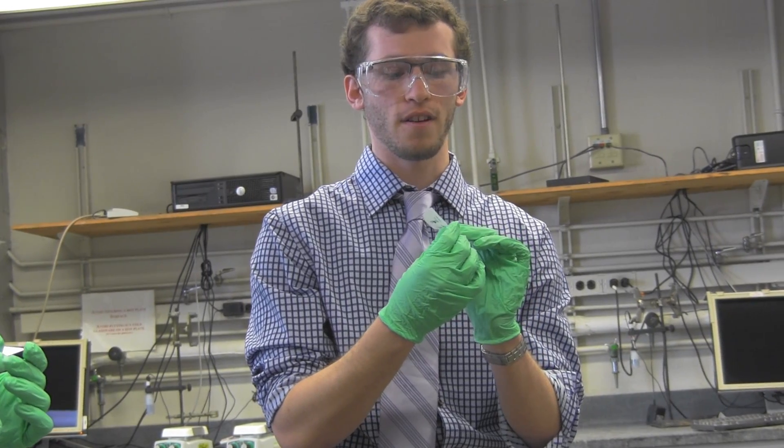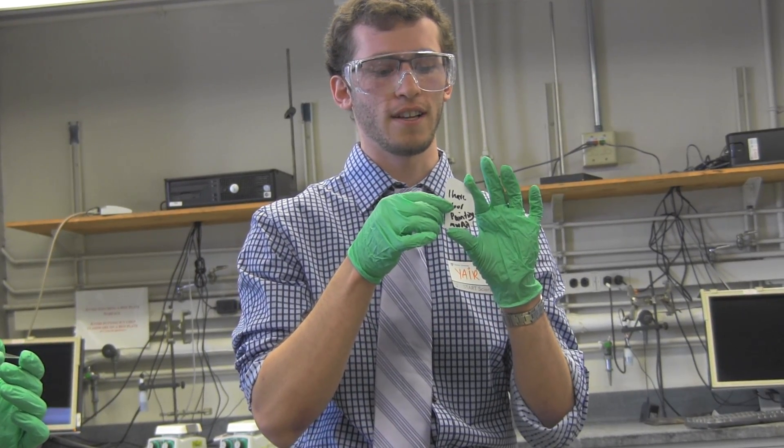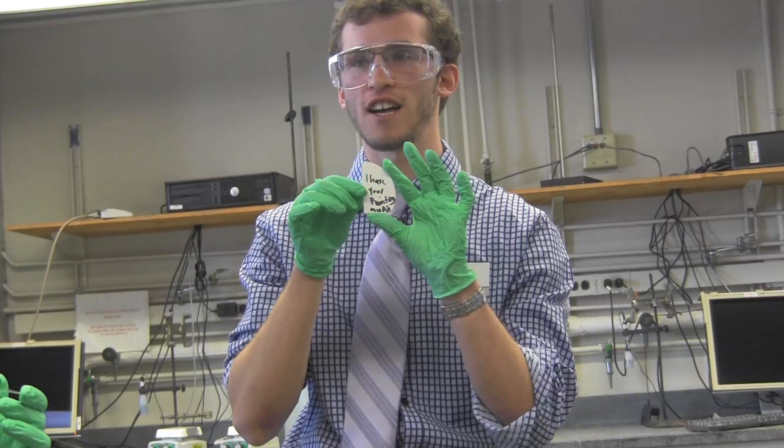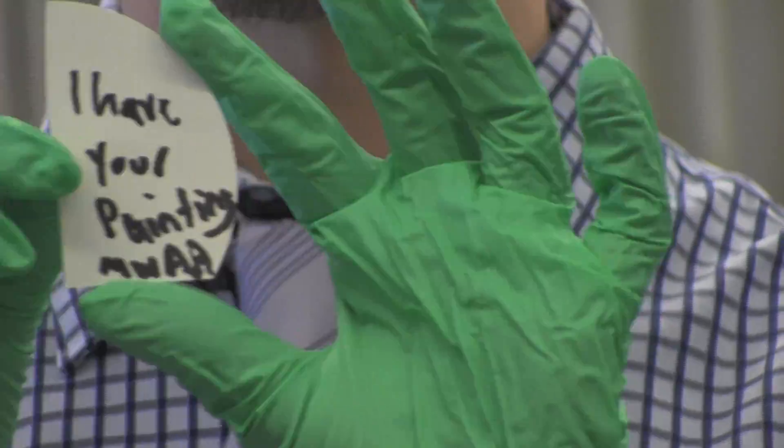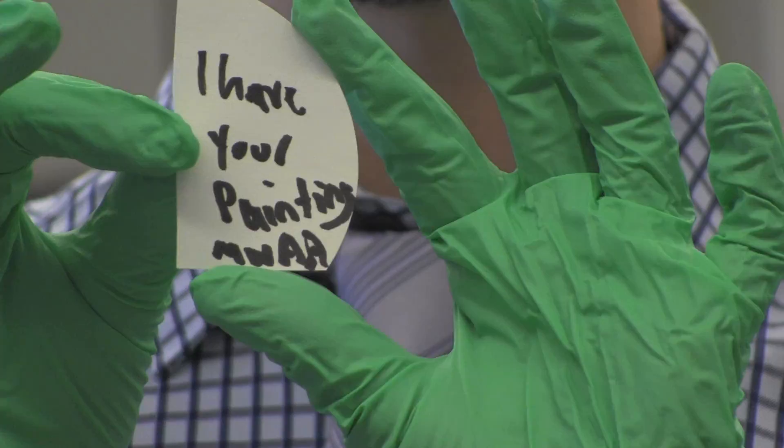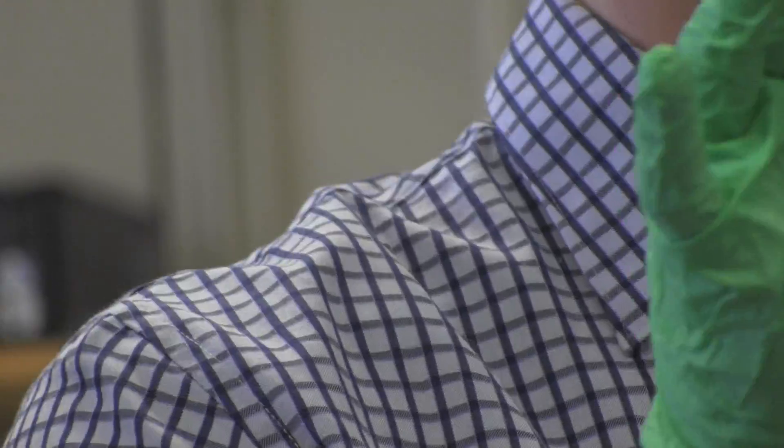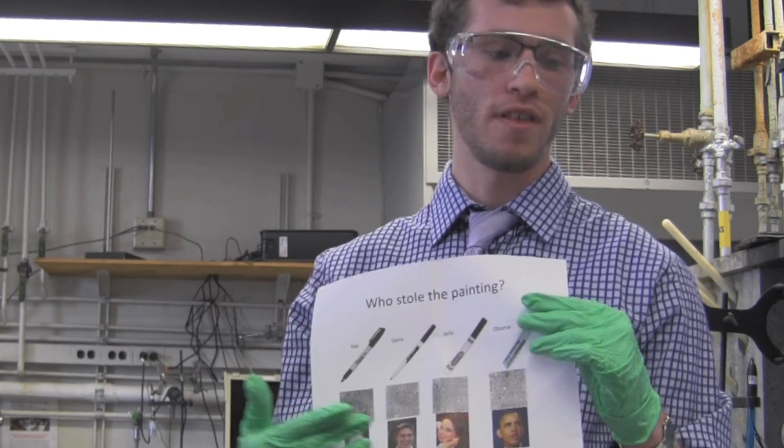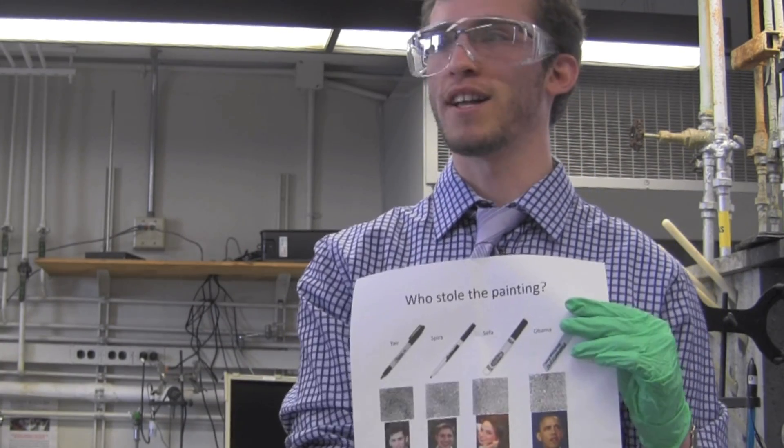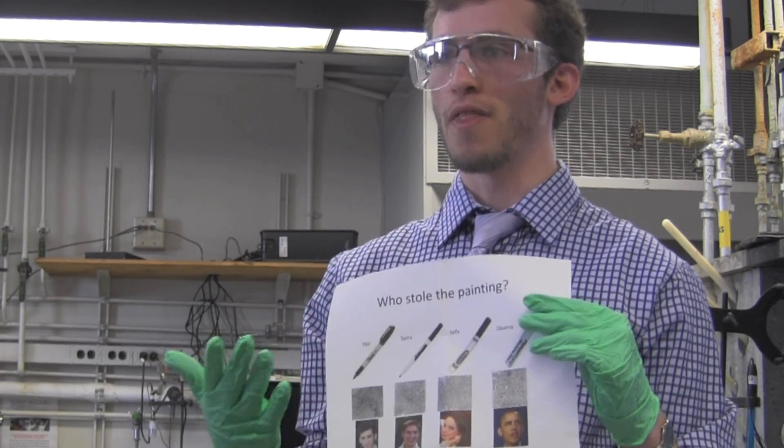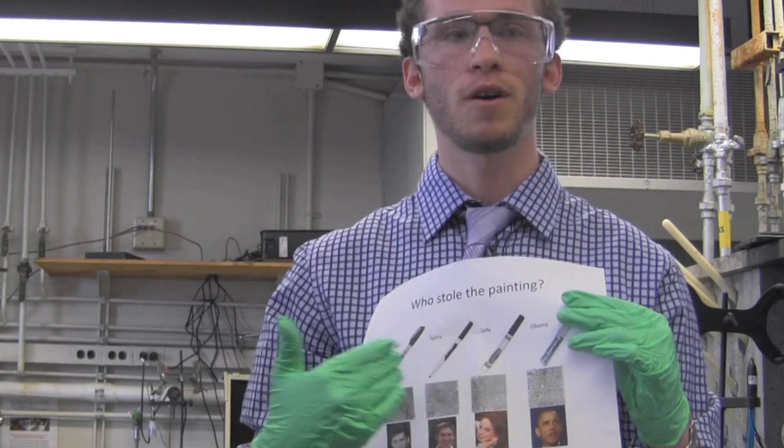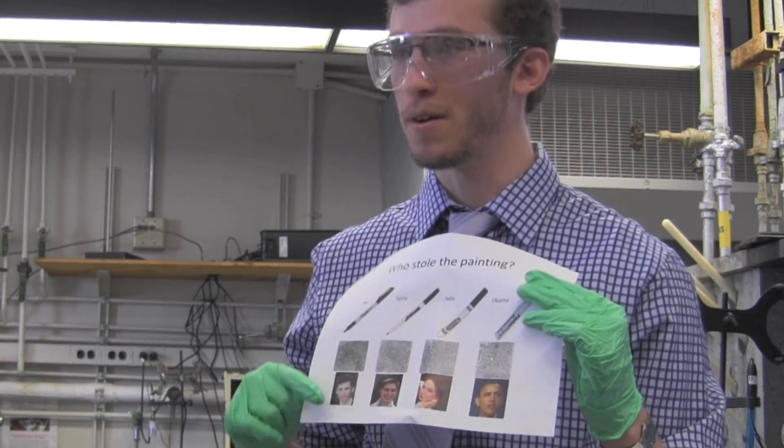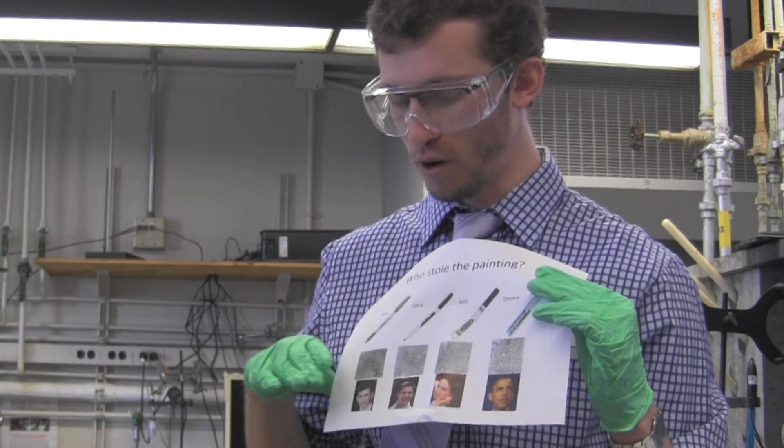We also have this ransom note which I haven't showed you guys yet. It says in really childish handwriting, written by the perpetrator, 'I have your painting.' Note that I'm handling it with gloves to make sure not to contaminate the evidence. By comparing the different markers to what's written on the note, we want them to explain that you're able to tell which marker wrote the note. Based on which marker wrote the note, we have the fingerprint and we're able to find who the perpetrator is. And of course I'm not an option.